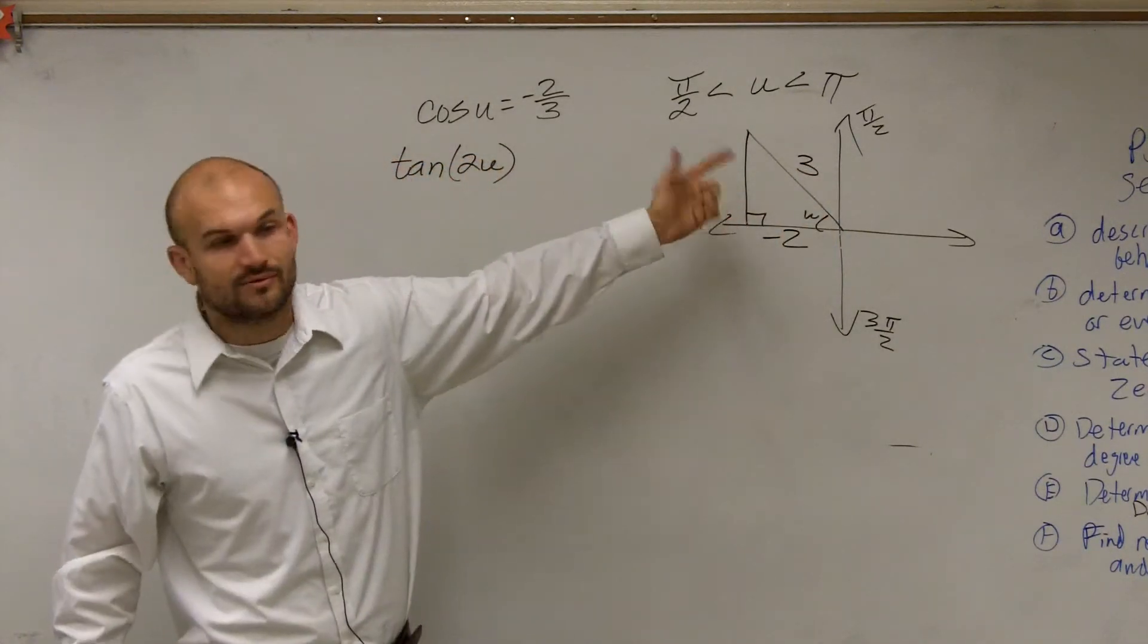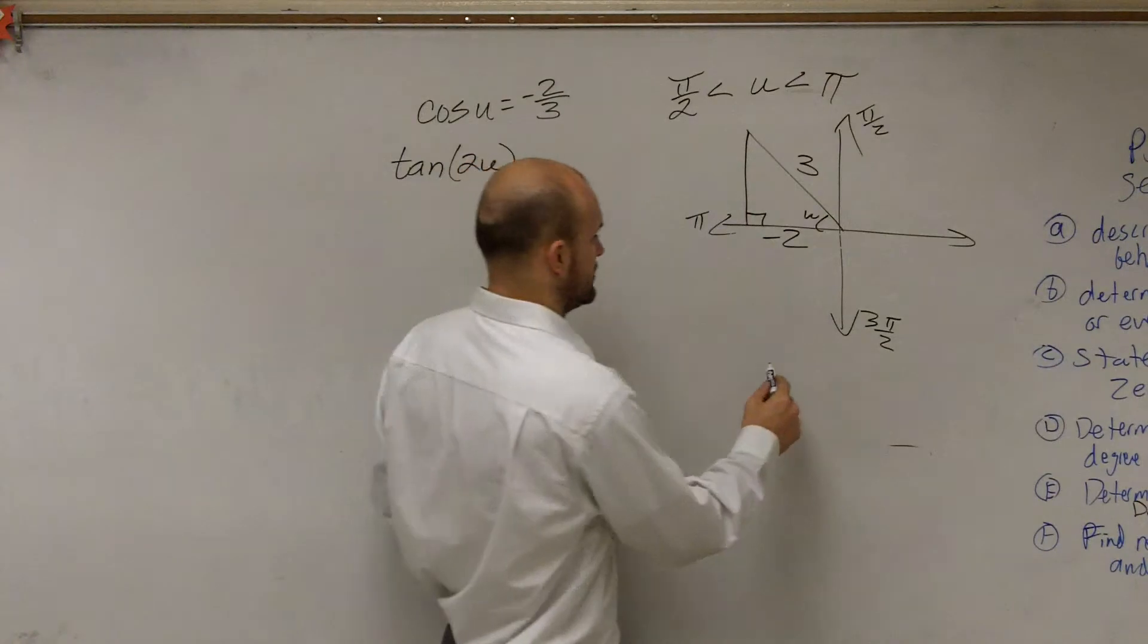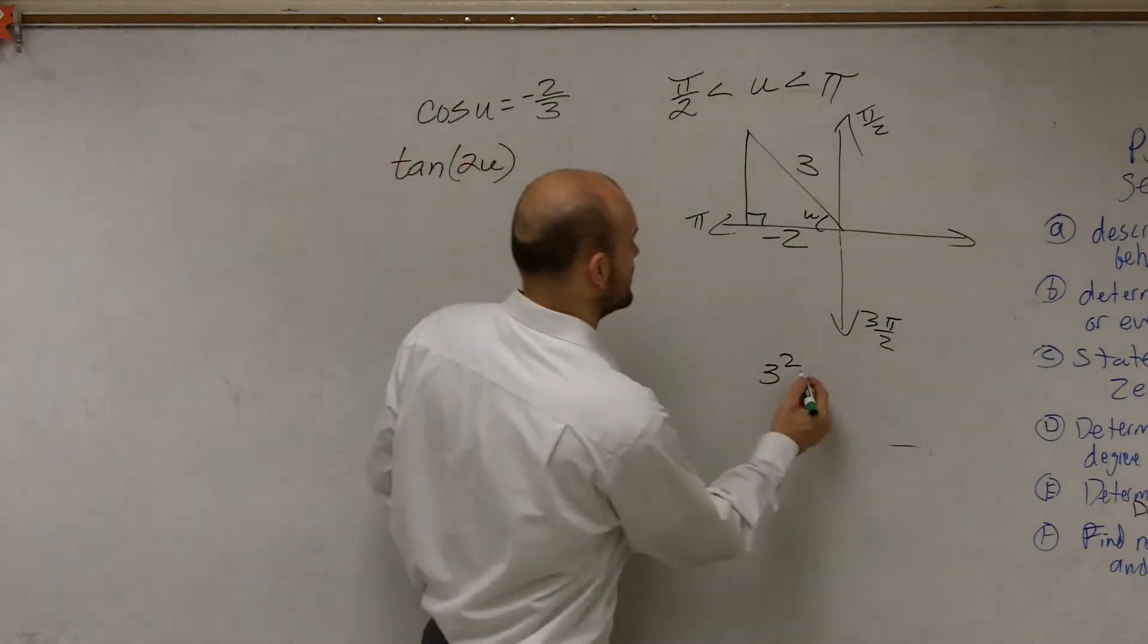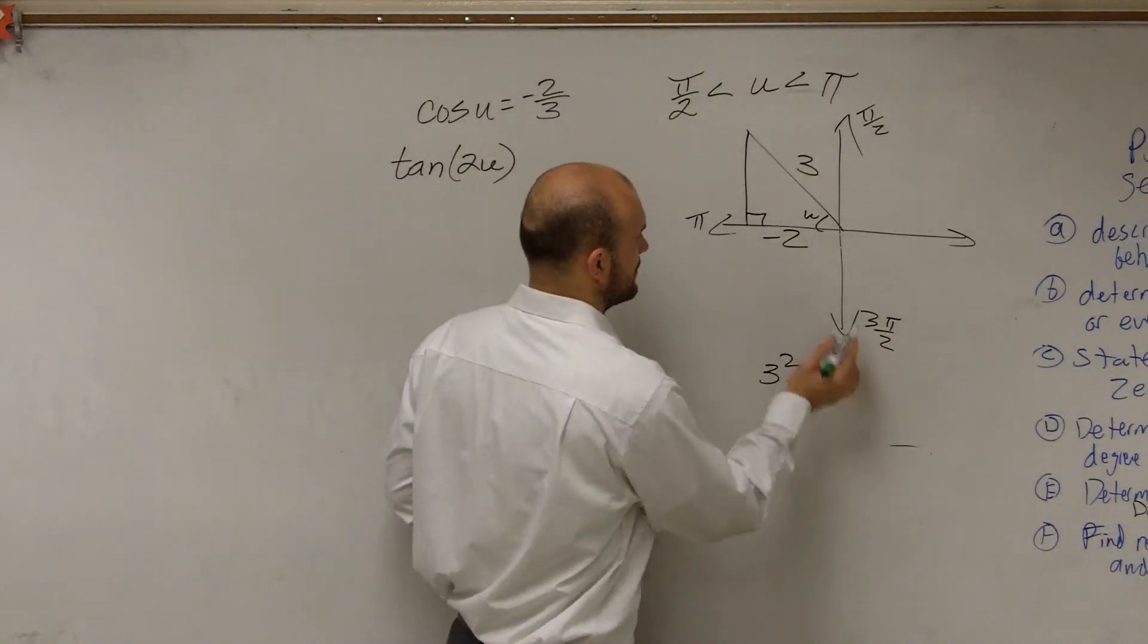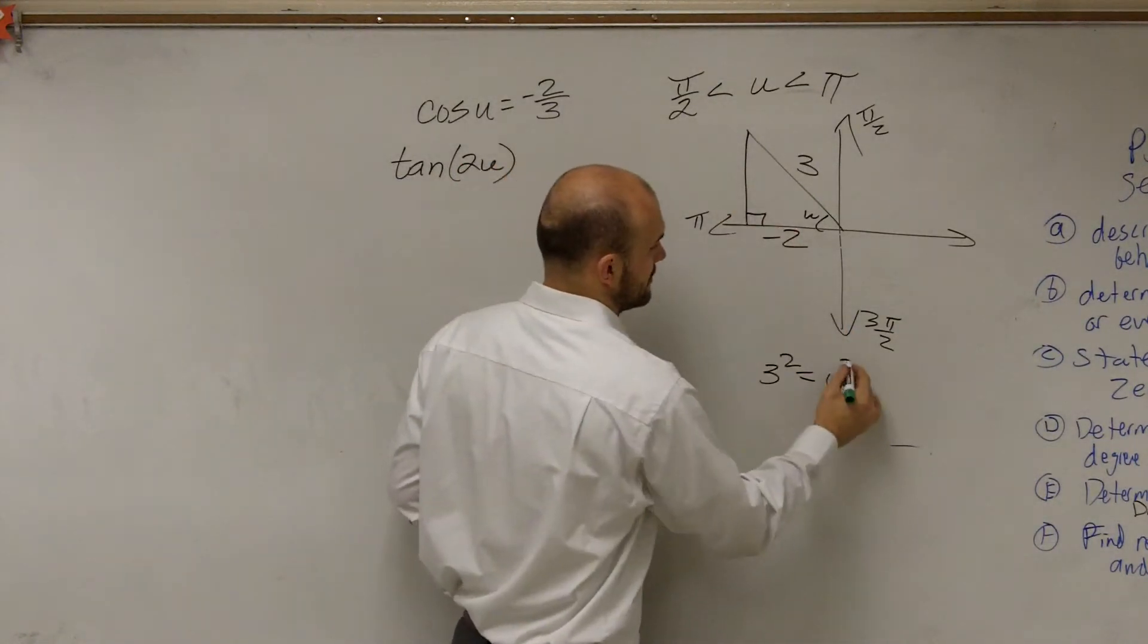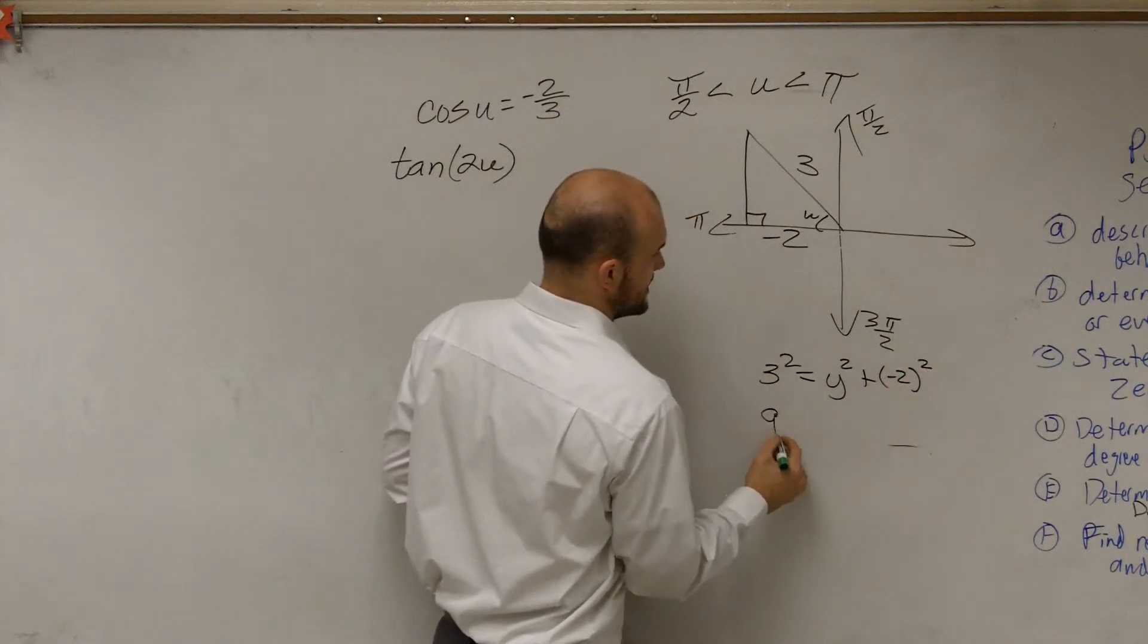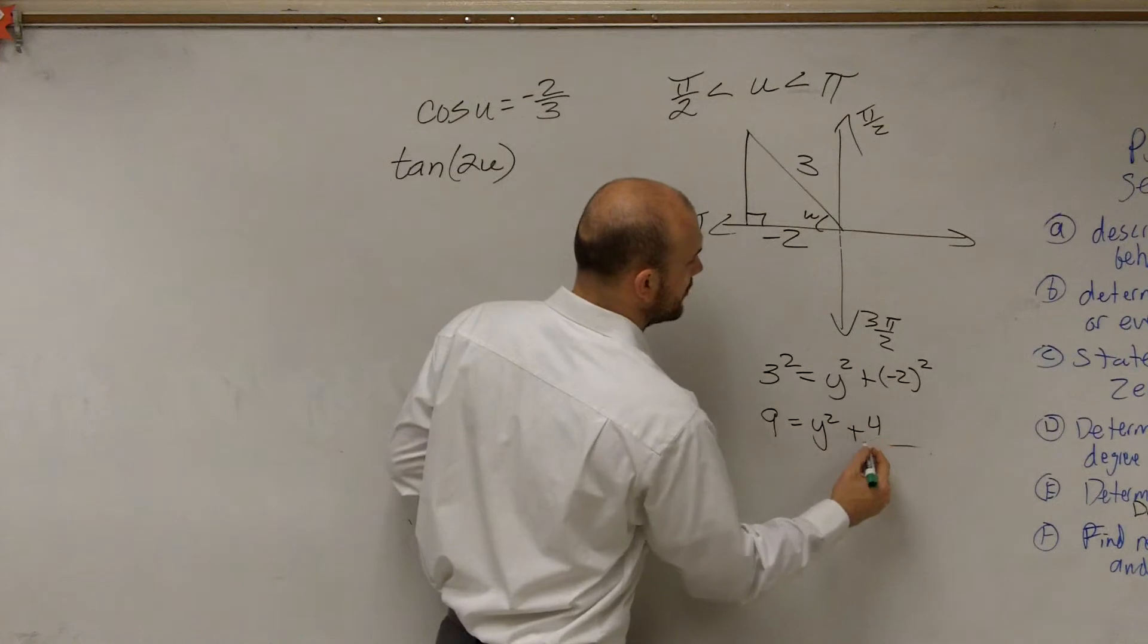To be able to find the opposite, we obviously have to use Pythagorean theorem. That's why I chose to do one that's a little bit different than the last one. The last one was easy, it was a Pythagorean triple. This one's a little more difficult. Let's call this y, so 3² = y² + (-2)². We get 9 = y² + 4.